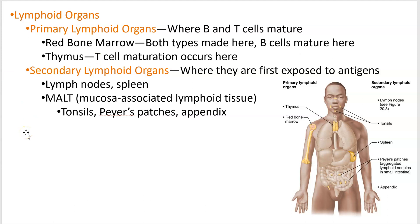Secondary lymphoid organs are where cells get exposed to pathogens or antigens. Pathogens have antigens on them. This includes the spleen and lymph nodes — lymph nodes being especially important — and then MALT, which stands for mucosa-associated lymphoid tissue. It's pretty much diffuse lymphoid tissue, kind of scattered. Your tonsils are good examples of that.